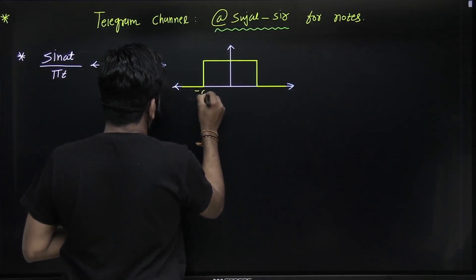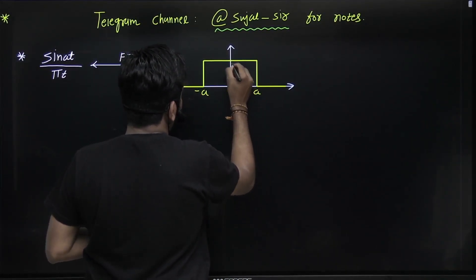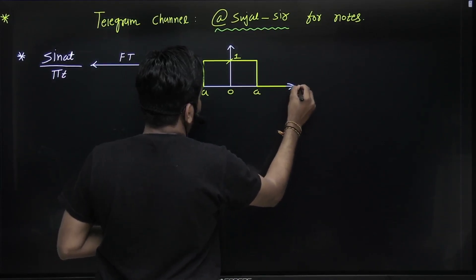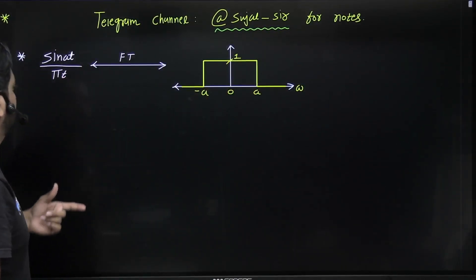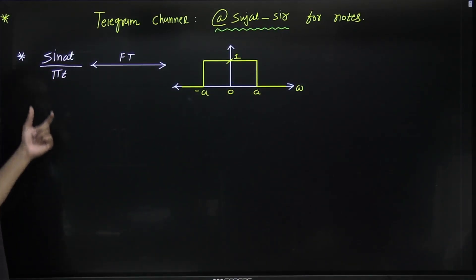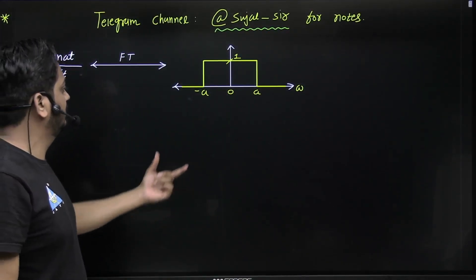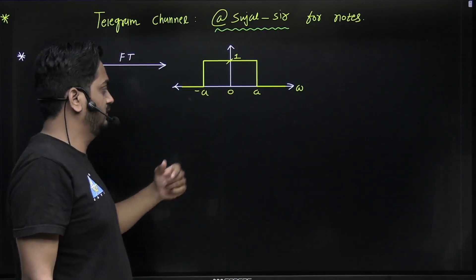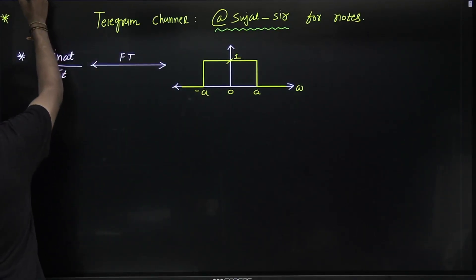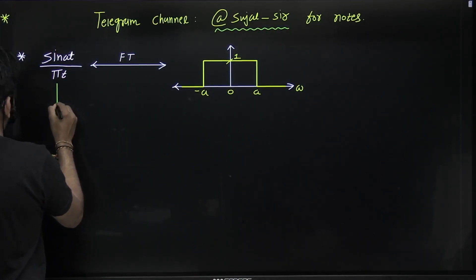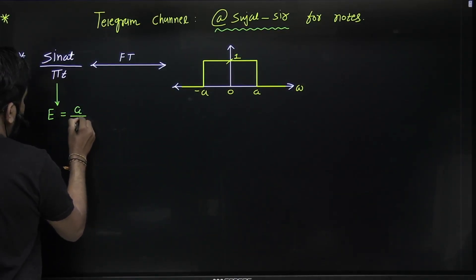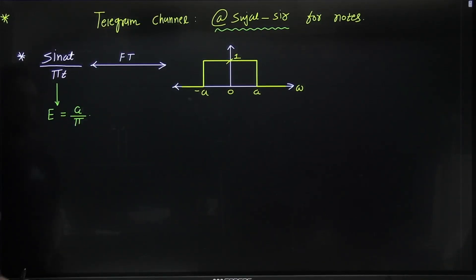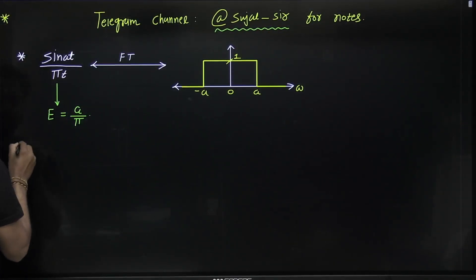The rectangle pulse goes from minus a to plus a with amplitude one, and here this is omega — you can write this is X(ω). If this is x(t), this is very important: sine(at) divided by πt is nothing but the rectangle function, and its energy is given by simply a upon π.